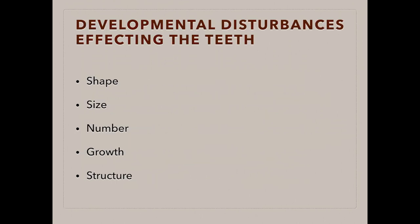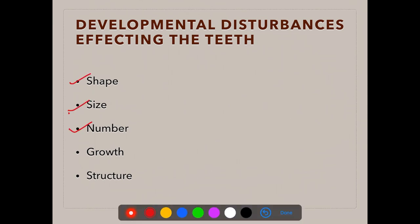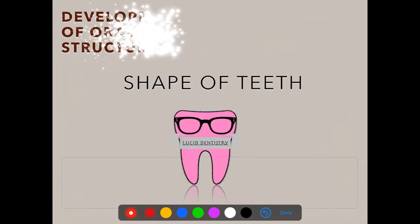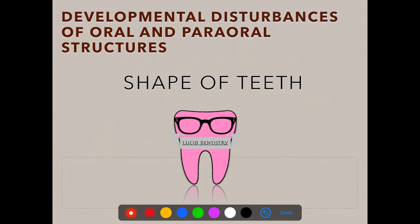Under the first category, developmental disturbances affecting the teeth, we will be learning about changes in the shape, size, number, growth, and structures of the teeth. In today's lecture, I will be explaining about the developmental disturbances affecting the shape of the teeth.